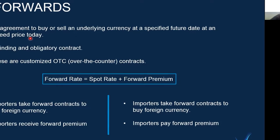The forward rate is the sum of spot rate and forward premium. The spot rate is the current market rate and the forward premium is the interest rate differential between the two currencies. The forward premium is from the day of booking the contract till the day of maturity of the contract. Since exporters receive foreign currency, they take forward contracts to sell foreign currency to hedge their forex risk. When exporters enter into a contract, they receive a forward premium, which is the benefit for them.